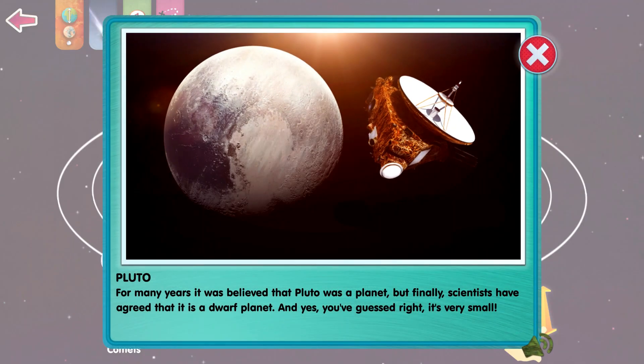Pluto. For many years, it was believed that Pluto was a planet. But finally, scientists have agreed that it is a dwarf planet. And yes, you've guessed right, it's very small.